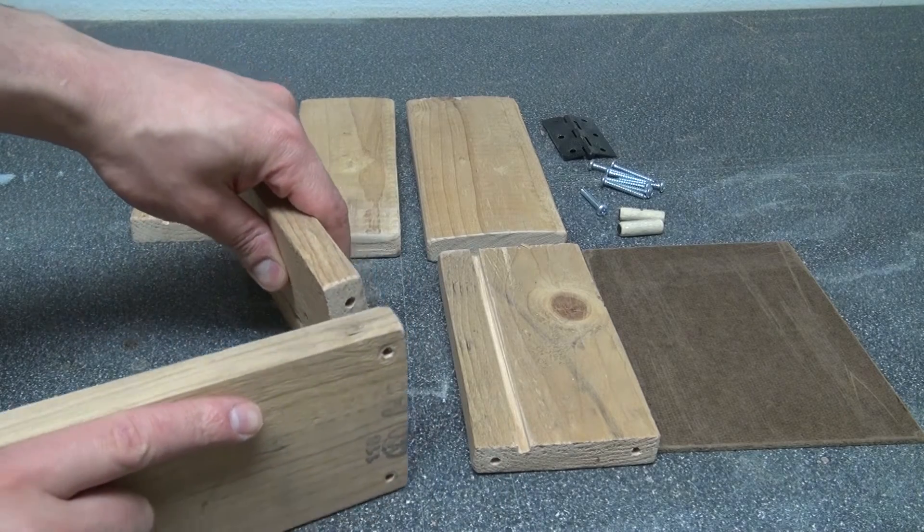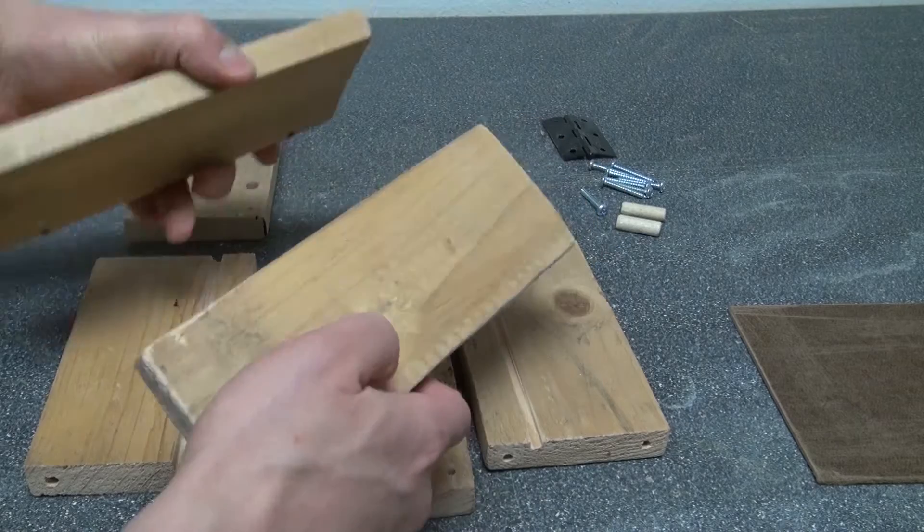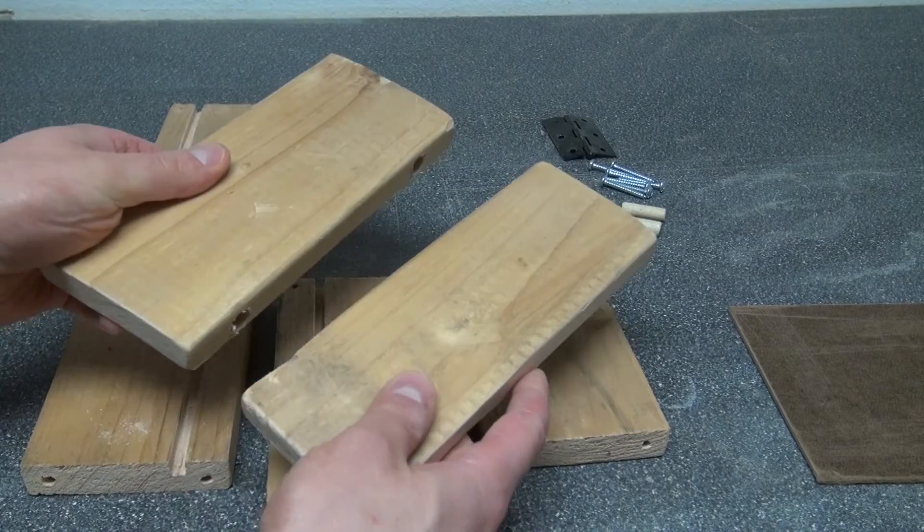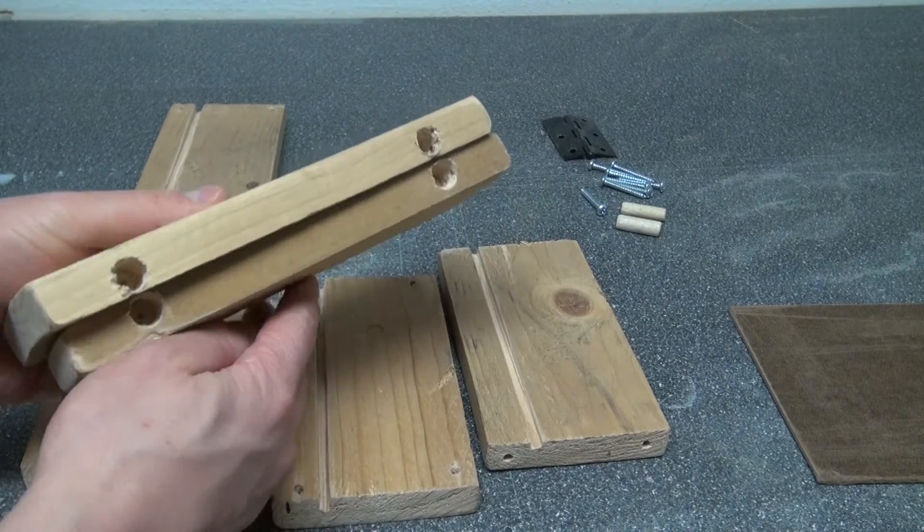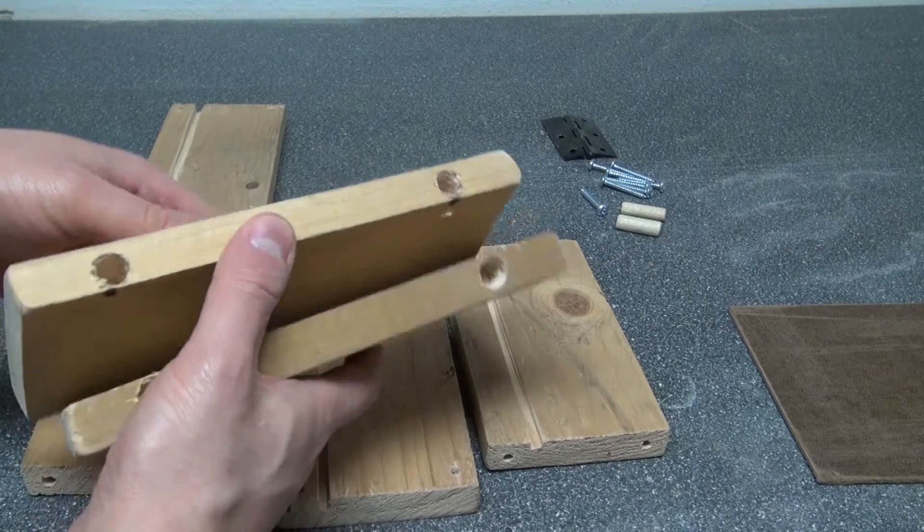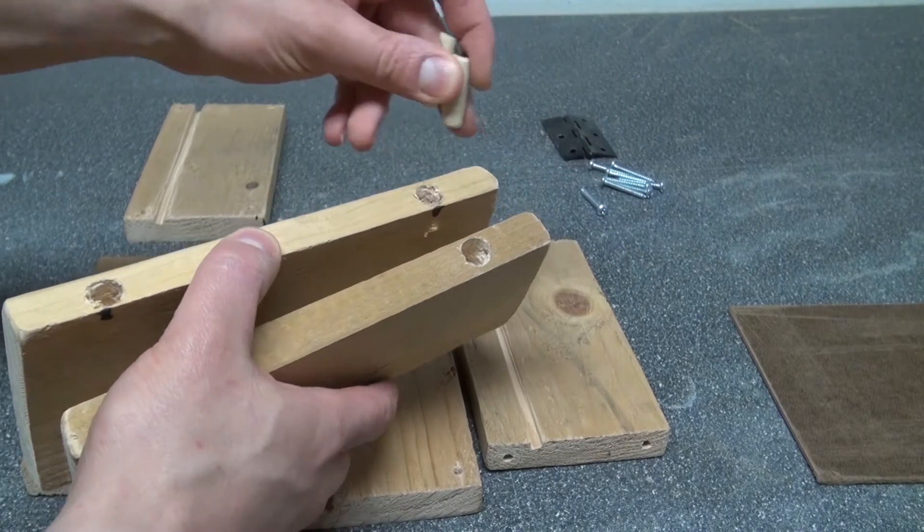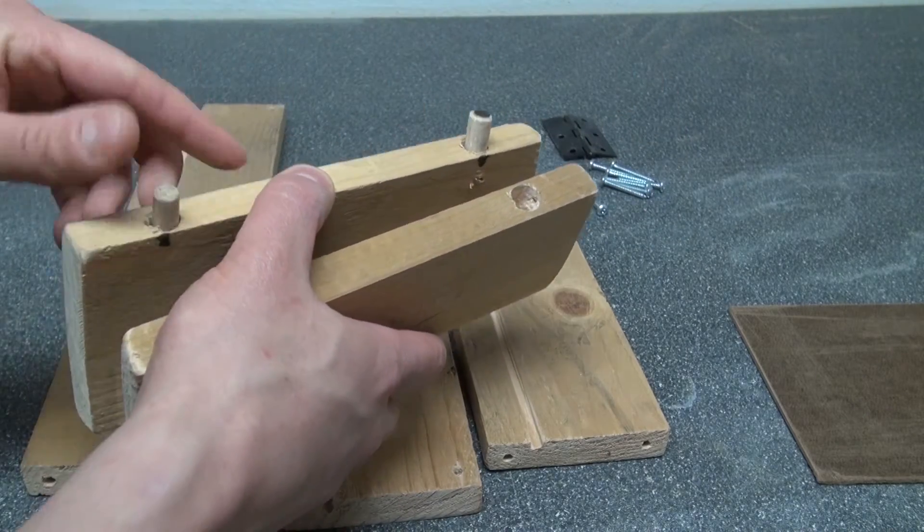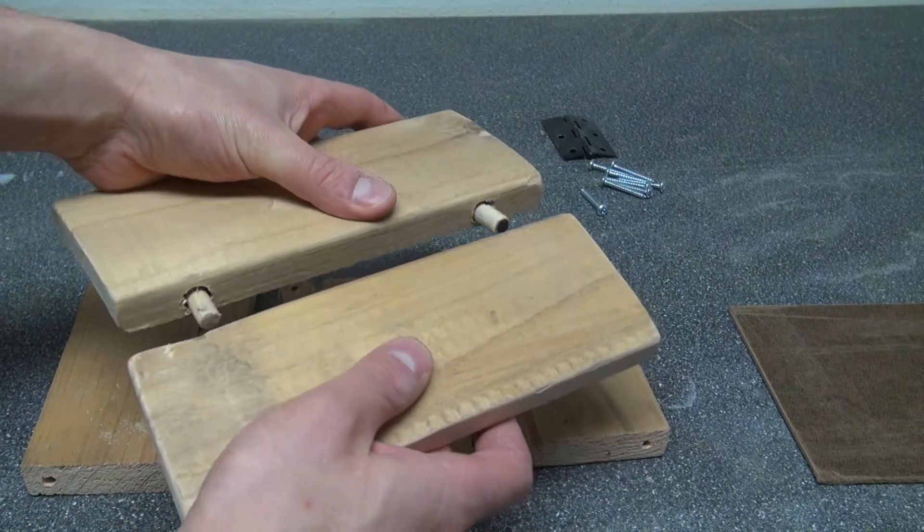Now it's time to assemble it together. And for the lid to connect the two together, I've drilled two pilot holes so that I can put these wooden dowels in. Glue it in and then attach it just like this. And that way I have the lid attached. That's how you make the lid.